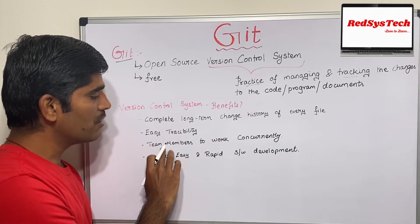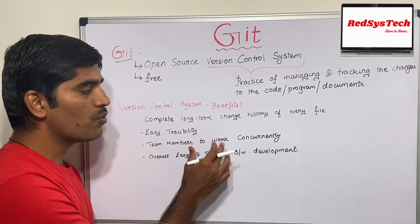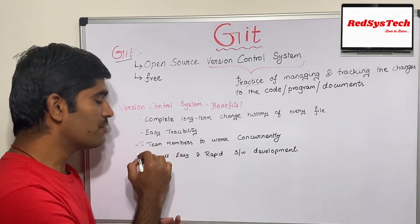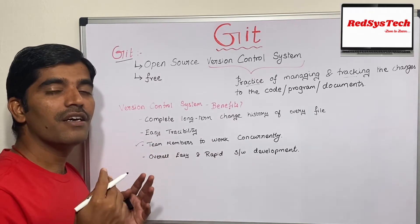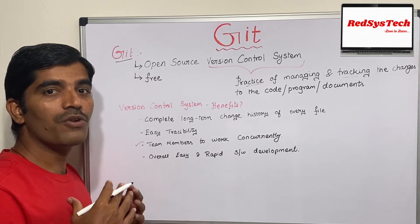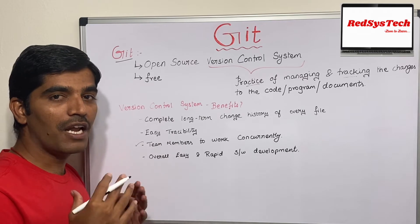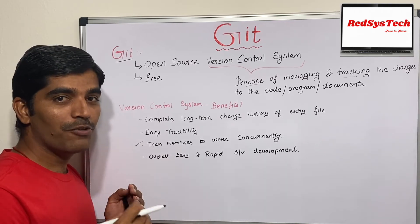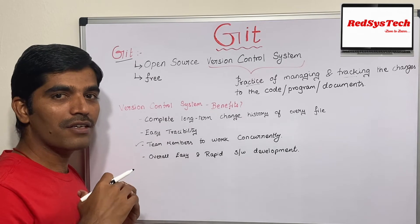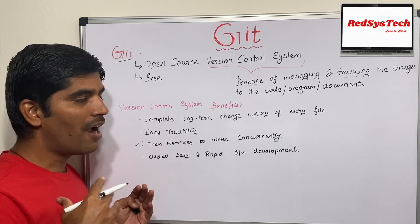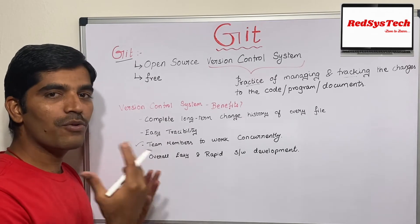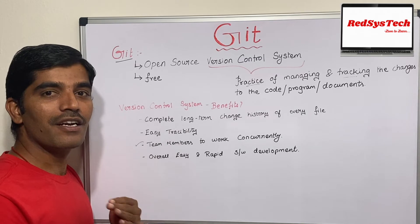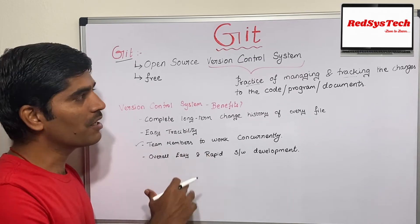The third benefit is that team members can work concurrently. This is a very advanced feature. With Git, developer one and developer two can individually work on the same code at the same time, push their code, and then merge it — working in a concurrent and very efficient way.